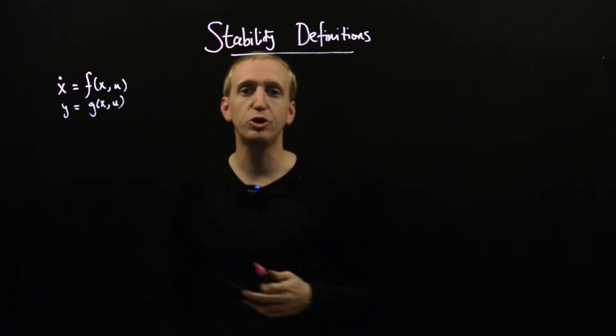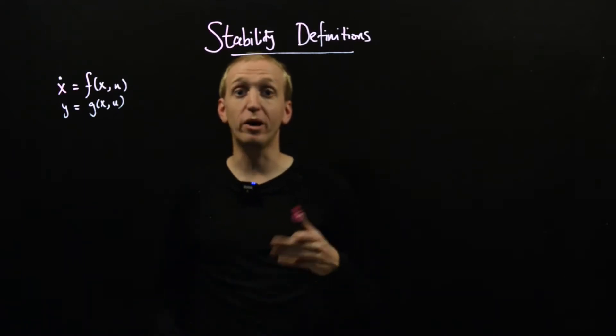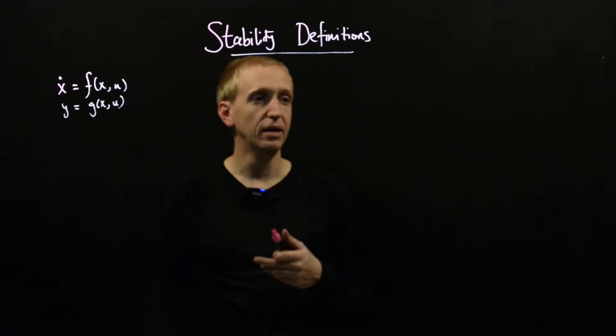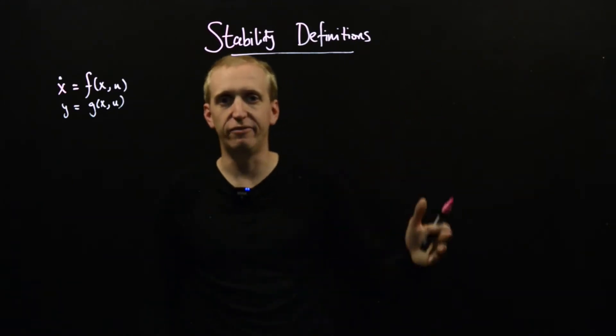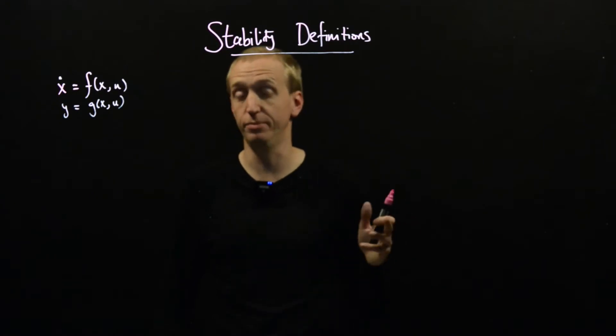So we'll start by just building a wish list of properties of stability or what we might like for stability. And then we'll try and give some corresponding mathematical descriptions of those, and those will be our stability definitions.